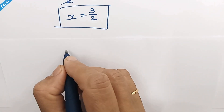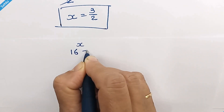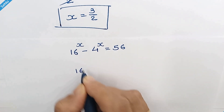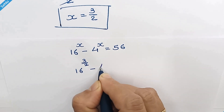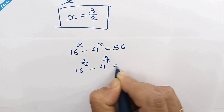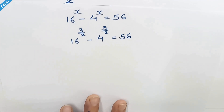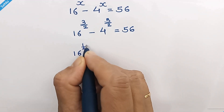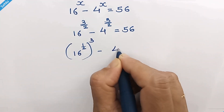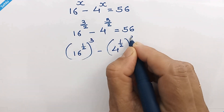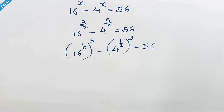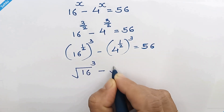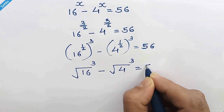Let's quickly verify this answer. Our given question, putting x equal to 3 over 2: 16 raised to 3 over 2 minus 4 raised to 3 over 2 is equal to 56. This can be written as 16 raised to 1 over 2, whole cubed, minus 4 raised to 1 over 2, whole cubed, which is square root of 16, cubed, minus square root of 4, cubed, equal to 56.